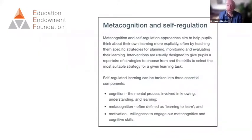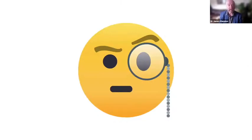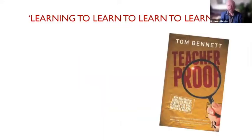The EEF says metacognition and self-regulation approaches aim to help pupils think about their own learning more explicitly, often by teaching them strategies for planning, monitoring, and evaluating their learning. The EEF have a slightly strange definition of self-regulated learning, breaking it down into three sub-domains: cognition, metacognition - which they equate with learning to learn - and motivation. I think there are quite a number of things wrong with the way the EEF defines these words, and I think this really matters.